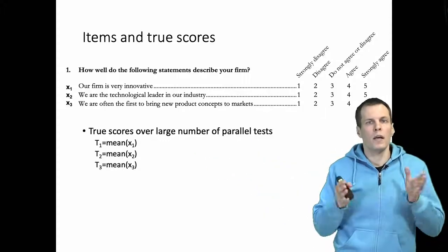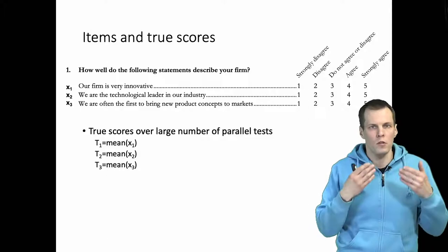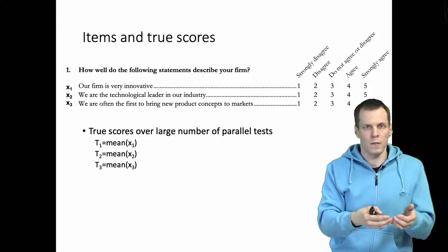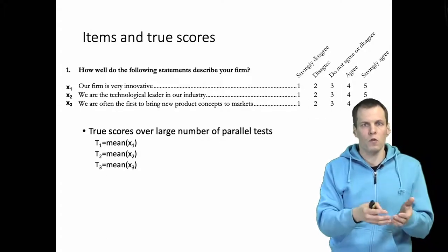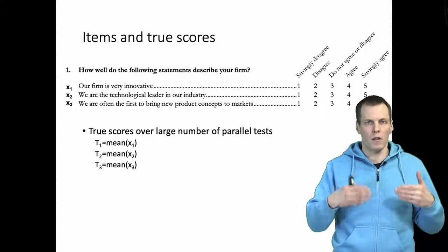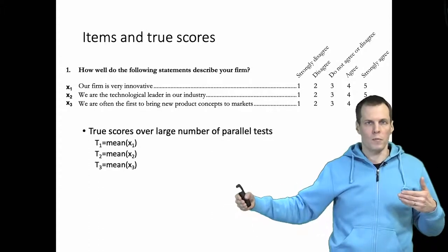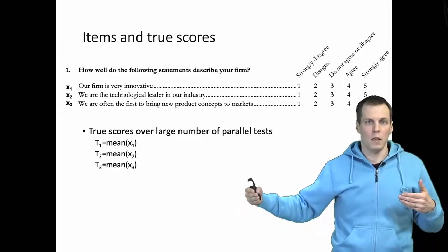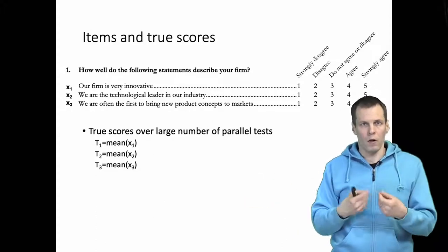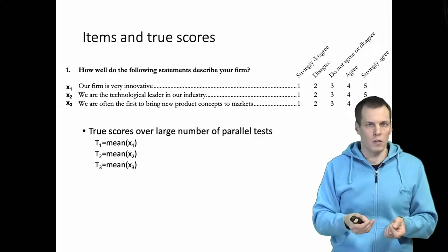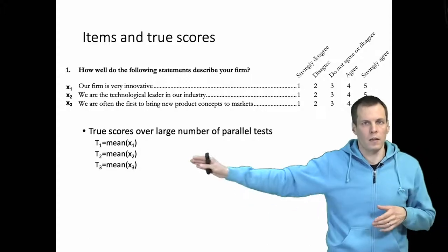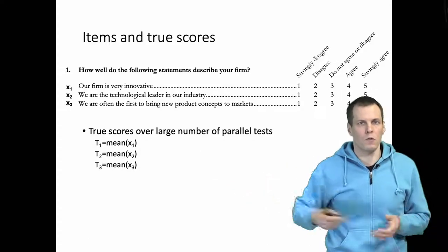The idea behind the true score is that the measured score X is a function of the true score and random noise. In a large number of replications of the measurement process, the different instances of random noise cancel each other out, and what remains in the mean is just the true score.